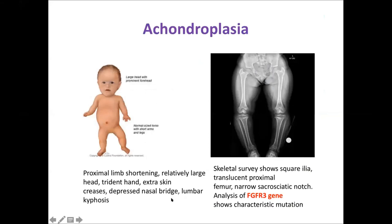Achondroplasia presents with short stature, a large head, and short arms and legs. X-ray shows skeletal features such as a square-shaped hip bone and narrow sacroiliac notch. This is a single gene disorder, so we look for mutations in the FGFR3 gene. We have now seen several methods of genetic testing: karyotype, methylation studies, and single gene testing.